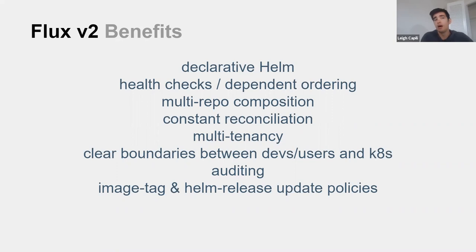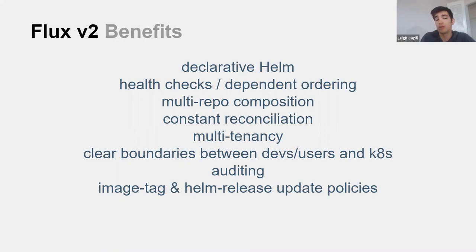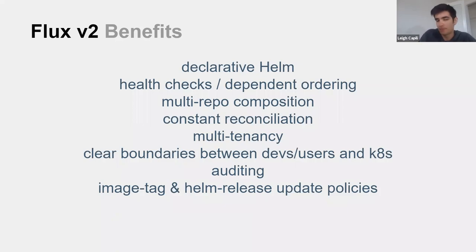Flux 2 is much more broken down - you can actuate every piece of your GitOps approach using each of our APIs or extension mechanisms. Flux 2 is more Kubernetes native. The trade-off is there is a little bit more complexity that you can be willing to take on, which is why our documentation story is ten times better than it used to be.